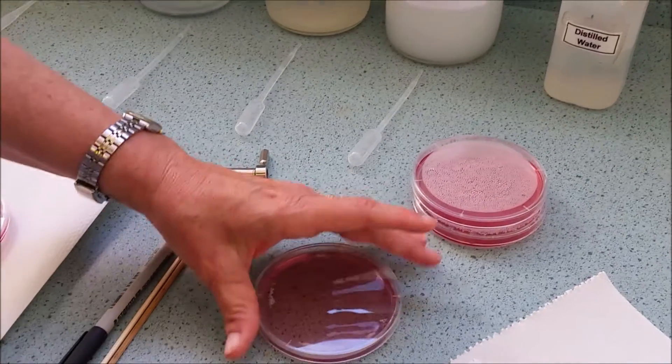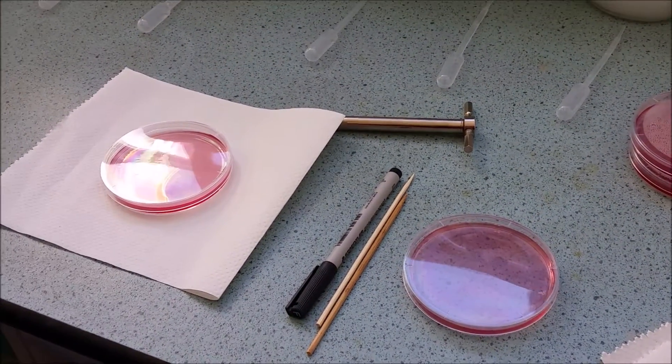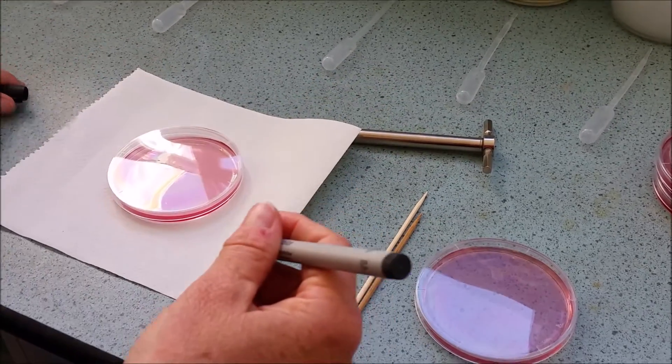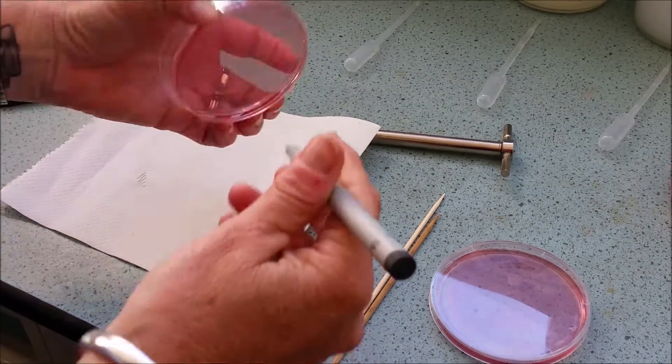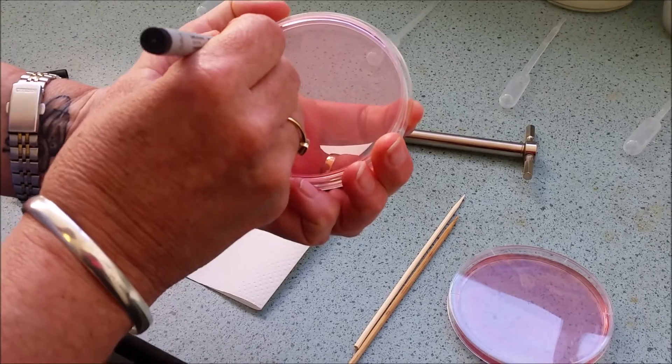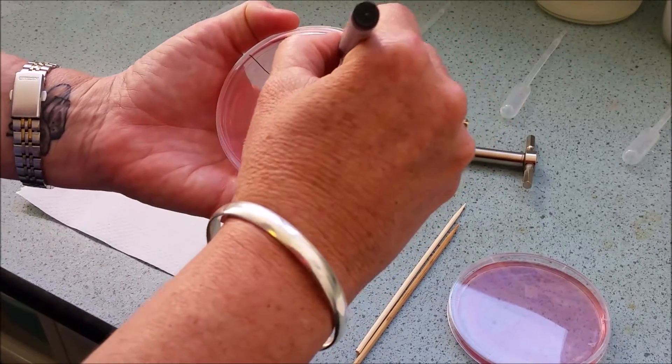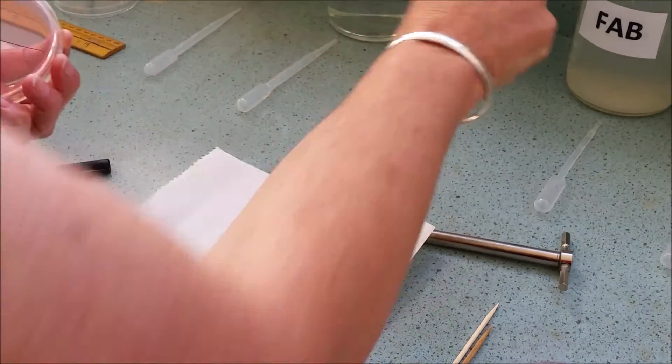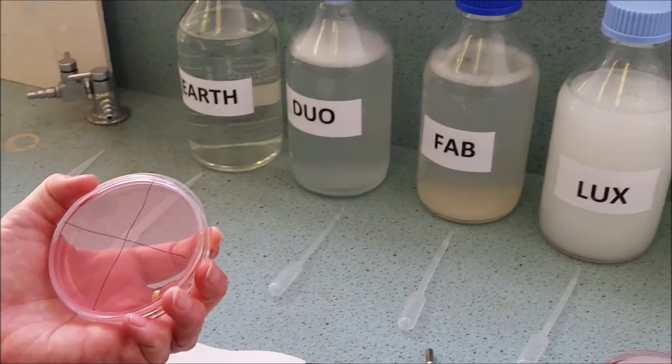Once that's done you'll have two petri dishes as I said. The next step that you need to do is to use your black marker pen to very carefully on the underside of your petri dish to divide it up into fours. And then label each of the laundry detergents that you'll be using in each of the squares.